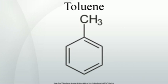Reaction with potassium permanganate and dilute acid, e.g. sulfuric acid, or potassium permanganate with concentrated sulfuric acid, leads to benzoic acid, whereas reaction with chromyl chloride leads to benzaldehyde — a Étard reaction.